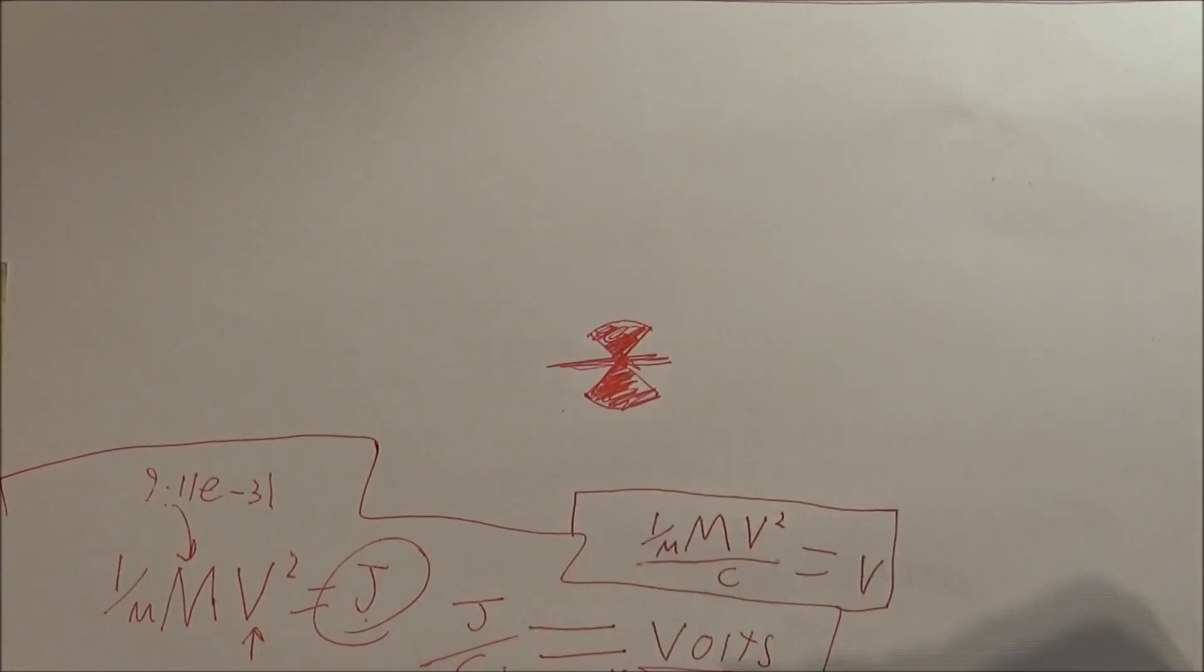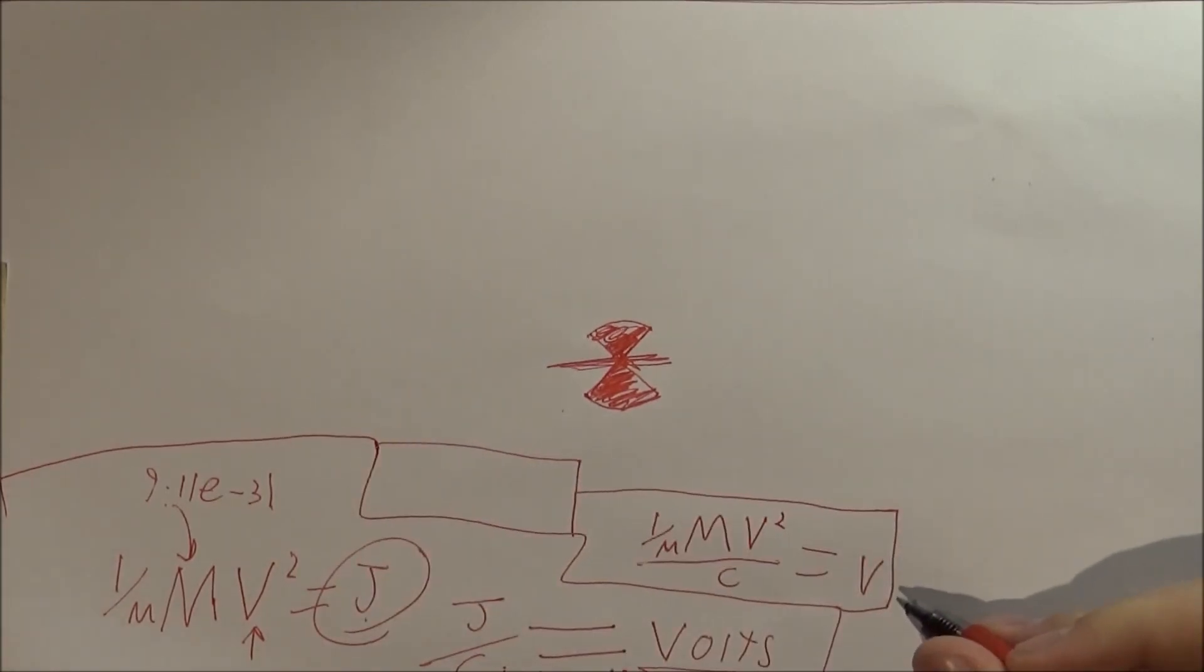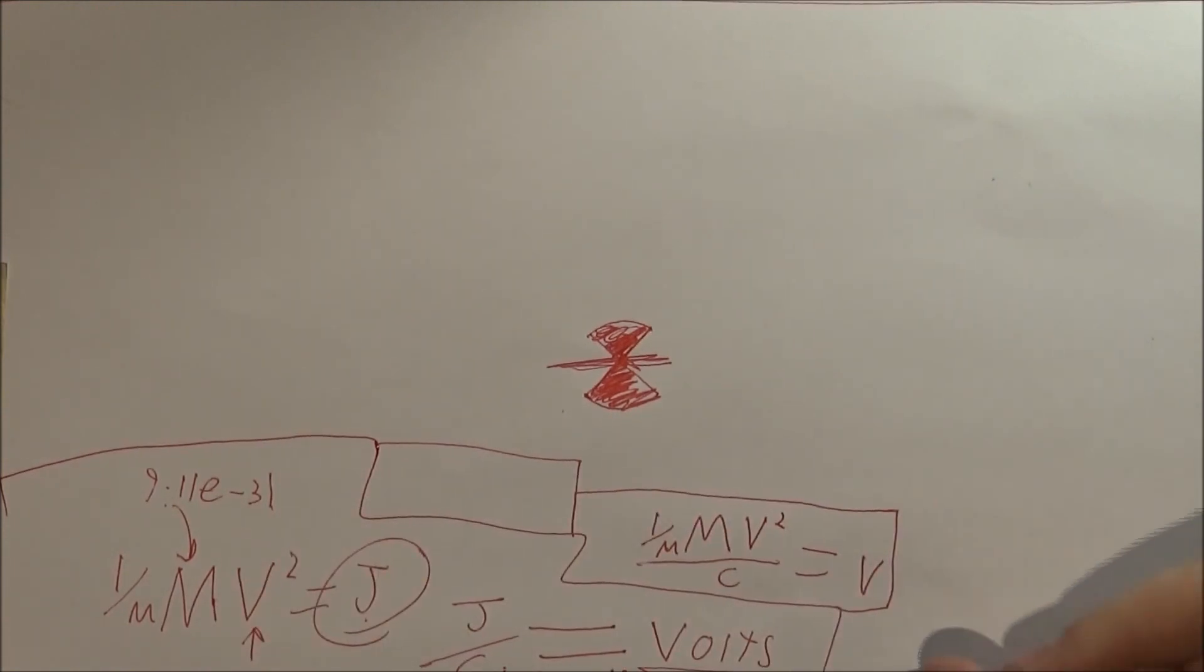So now I'm going to use C equals charge. I'm going to use U for velocity so you don't get the voltage, because I'm going to use V for voltage.